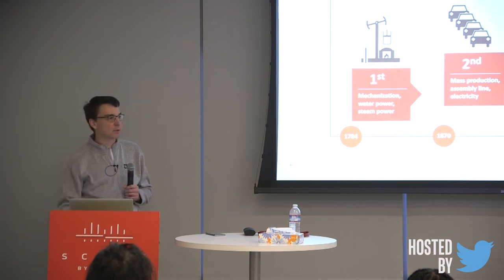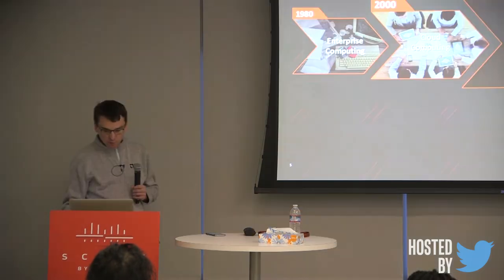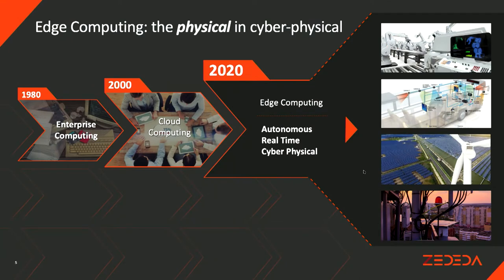I think our industry typically goes through waves between centralization and decentralization. Enterprise computing in the 80s was about workstations replacing mainframes. Then came cloud computing, which is centralized. By 2020 we'll see the emergence of edge computing, which to me means three things: autonomous — the edge system doesn't have to talk to the big cloud all the time; real-time — you have to be very close to physical objects; and cyber-physical — the behavior has to be software-defined.